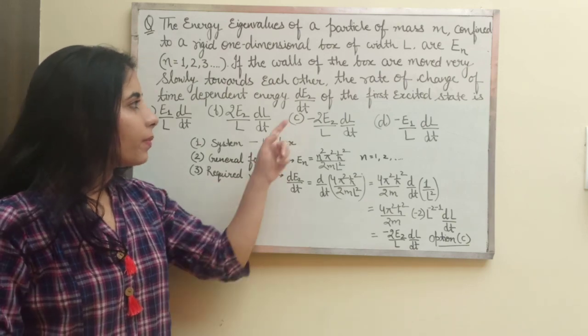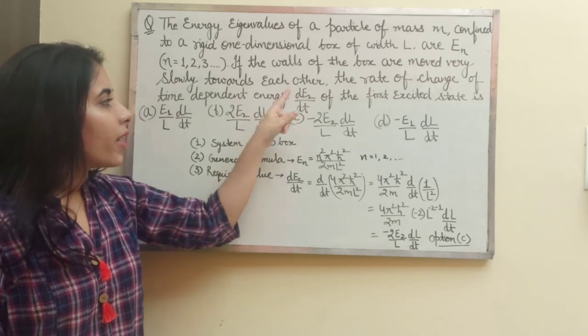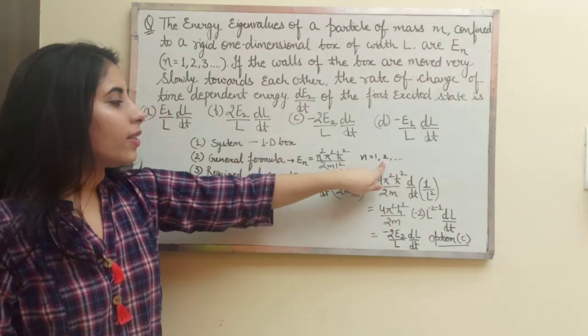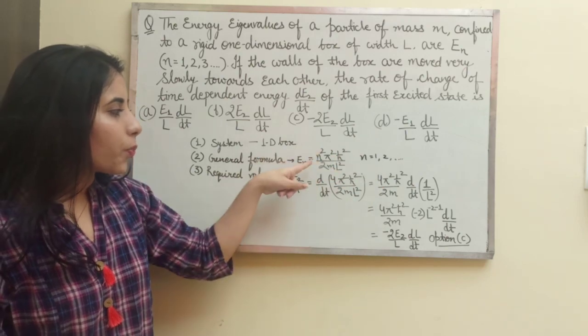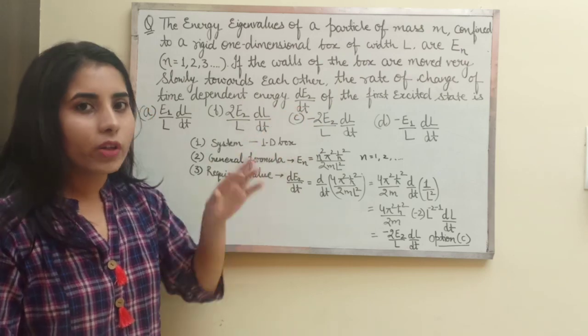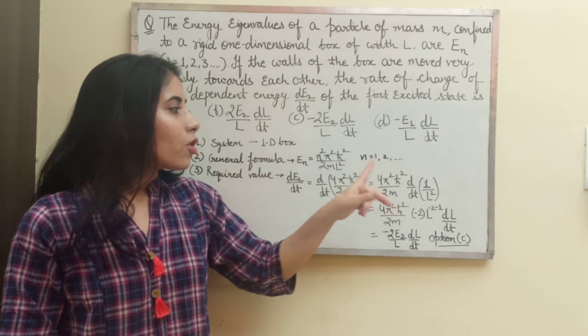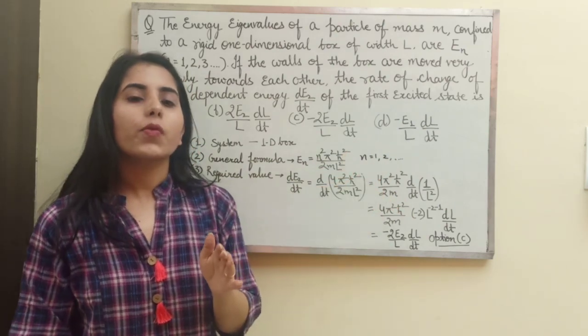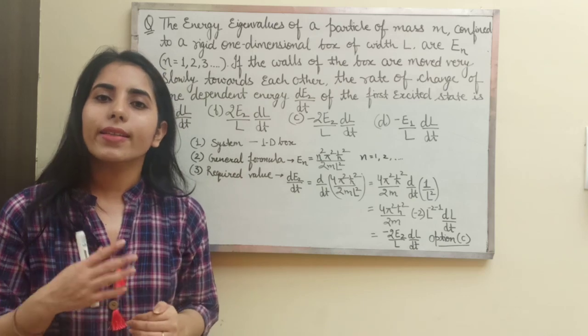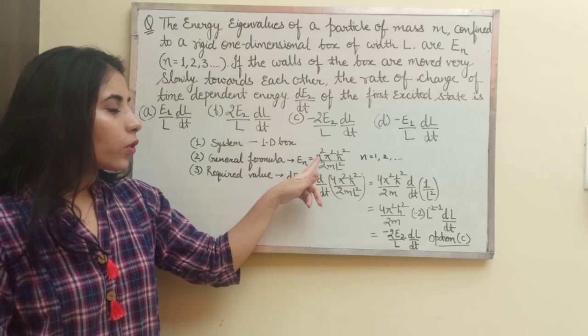Next thing, the required parameter which we need to find, the required value that is dE2 upon dt. Now what is E2 here? For n equals 2 you will get E2. So here you just need to put n equals 2 in this formula. And one more thing, even if they are not going to mention this term dE2 upon dt, they have mentioned the first excited state. So n equals 1 will give you the value for the ground state, n equals 2 will give you the value for the first excited state.